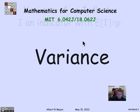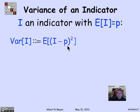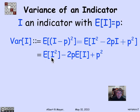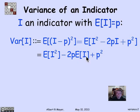Step one is to expand (I minus p)² algebraically: the expectation of I² minus 2pI plus p². Applying linearity of expectation gives us the expectation of I² minus 2p times the expectation of I plus p². Since i is 0,1-valued, I² equals I, so the expectation of I² simplifies to the expectation of I, and the expectation of I has appeared — that's p.